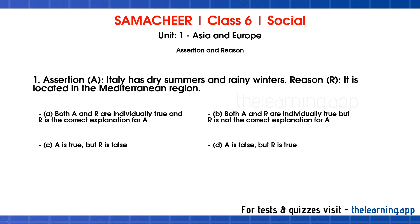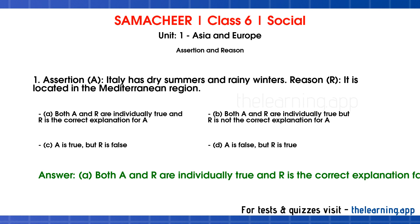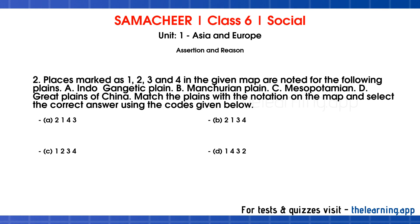Assertion and Reason. Question 1. Assertion A: Italy has dry summers and rainy winters. Reason R: It is located in the Mediterranean region. Options are: A. Both A and R are individually true and R is the correct explanation for A. B. Both A and R are individually true but R is not the correct explanation for A. C. A is true but R is false. D. A is false but R is true. Correct answer is A: Both A and R are individually true and R is the correct explanation for A.